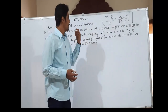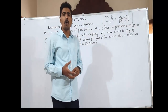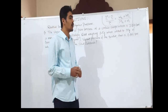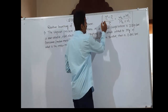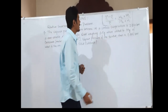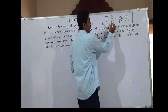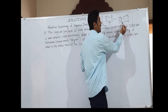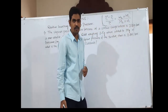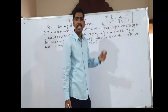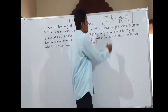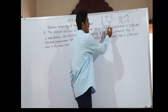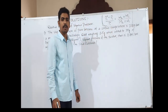Now we will solve some problems on relative lowering of vapour pressure. In the previous video, we derived the equation: P1⁰ minus P1 divided by P1⁰ is equal to W2 times M1 divided by M2 times W1. This is the formula to find the relative lowering of vapour pressure, where P1⁰ minus P1 divided by P1⁰ indicates the relative lowering of vapour pressure.